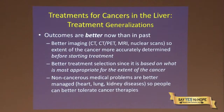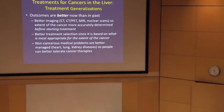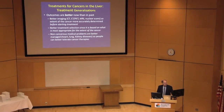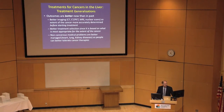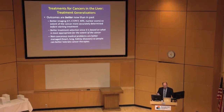Compared to the past, we now have better imaging — CAT scans, MRI, CT PET scans, and nuclear scans — so the extent of cancer is more accurately determined before starting treatment. This allows us to better select treatments based on what is most appropriate for the extent of cancer. Also, non-cancerous medical problems such as heart disease, lung disease, and kidney disease are better managed, so people can better tolerate cancer treatments — whether that's an operation, chemotherapy, embolization, or other modalities.